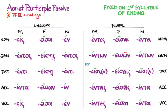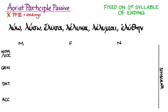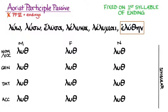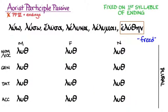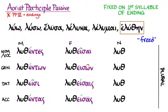The default translation for the aorist participle passive is simply 'verbed.' With luo, we take the sixth principal part in all cases and genders. Singular: masculine lutheis, luthentos, luthenti, luthenta; feminine luthesa, lutheses, luthese, luthesan; neuter luthen, luthentos, luthenti, luthen — all meaning 'freed.' Plural: masculine luthentes, luthenton, luthesi, luthentas; feminine luthesai, luthason, luthesais, luthesas; neuter luthenta, luthenton, luthesi, luthenta — still meaning 'freed.'